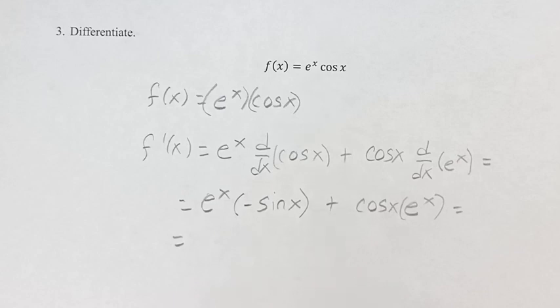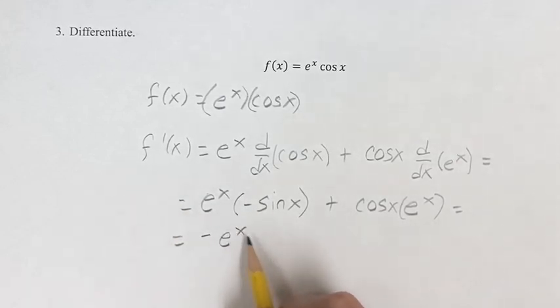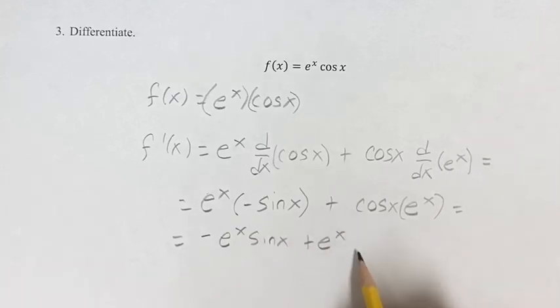So simplifying this expression, bringing the negative out front, we have negative e to the x sine x plus e to the x cosine x.